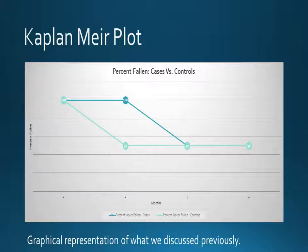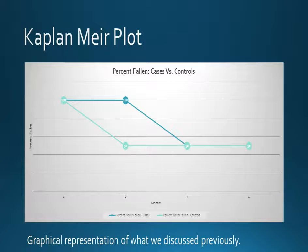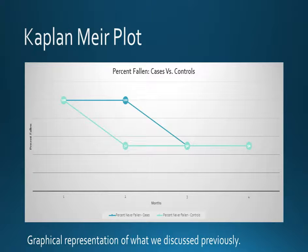And finally, this is what we came here for — the Kaplan-Meier plot. This is a graphical representation of what we discussed in the last two slides. You can see all the percentages and all the months for each axis. The darker color is the cases and the lighter color represents the controls. Take a moment to look at this graph because it represents all of the data that we just analyzed.